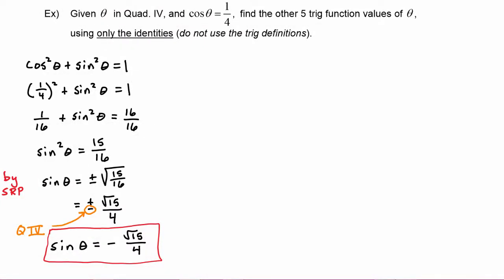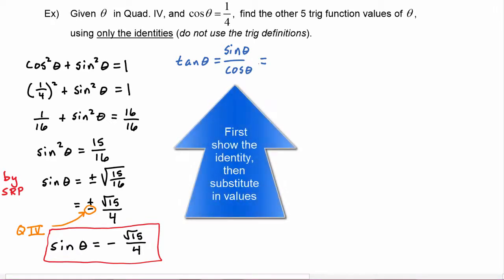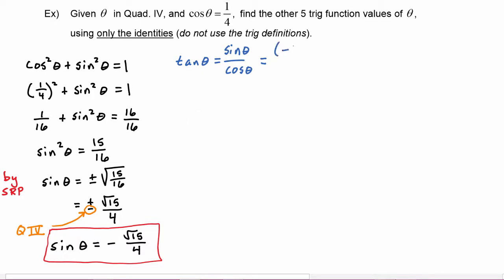Once you have sine theta and cosine theta, it's easy to find the other four trig values using identities. Using the identity tangent of theta equals sine of theta divided by cosine of theta, we substitute: sine is negative radical fifteen over four, and cosine is one fourth. This gives us negative radical fifteen over four times four over one — the fours cancel — leaving negative radical fifteen.